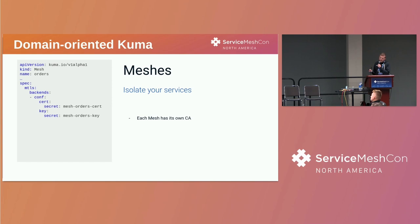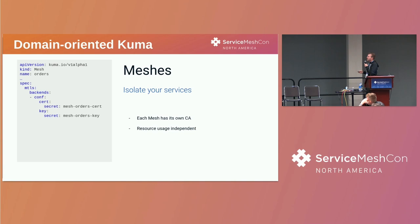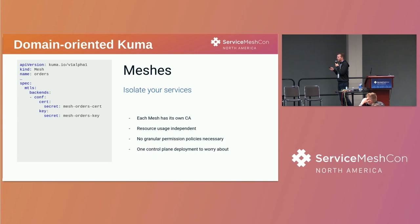This allows an optimization in the control plane. If a new service in mesh A comes up, the control plane knows it doesn't need to recalculate any configuration for mesh B, because it's impossible for a mesh B service to reach a service in mesh A anyway. So resource usage becomes independent between meshes. We don't have to create any additional permission policies — we can rely on the CA to enforce this separation between meshes, and say every service inside a mesh can communicate freely. And we still only have one actual control plane deployment to worry about.